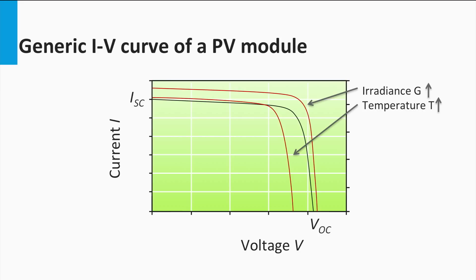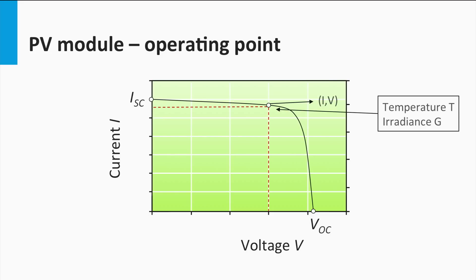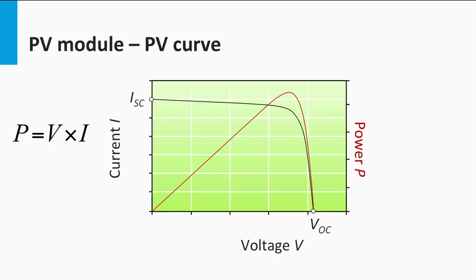Let's try to understand the concept of the operating point. At any given point in time the solar module operates at a particular voltage and current. The point on the IV curve where the solar module operates is called the operating point. For a given irradiance and temperature, an operating point on the IV curve corresponds to a unique IV value. We know that power is voltage times current. If we draw the power-voltage curve, or the PV curve, it takes a form as shown. An operating point on the IV curve will also correspond to a unique operating point on the PV curve.